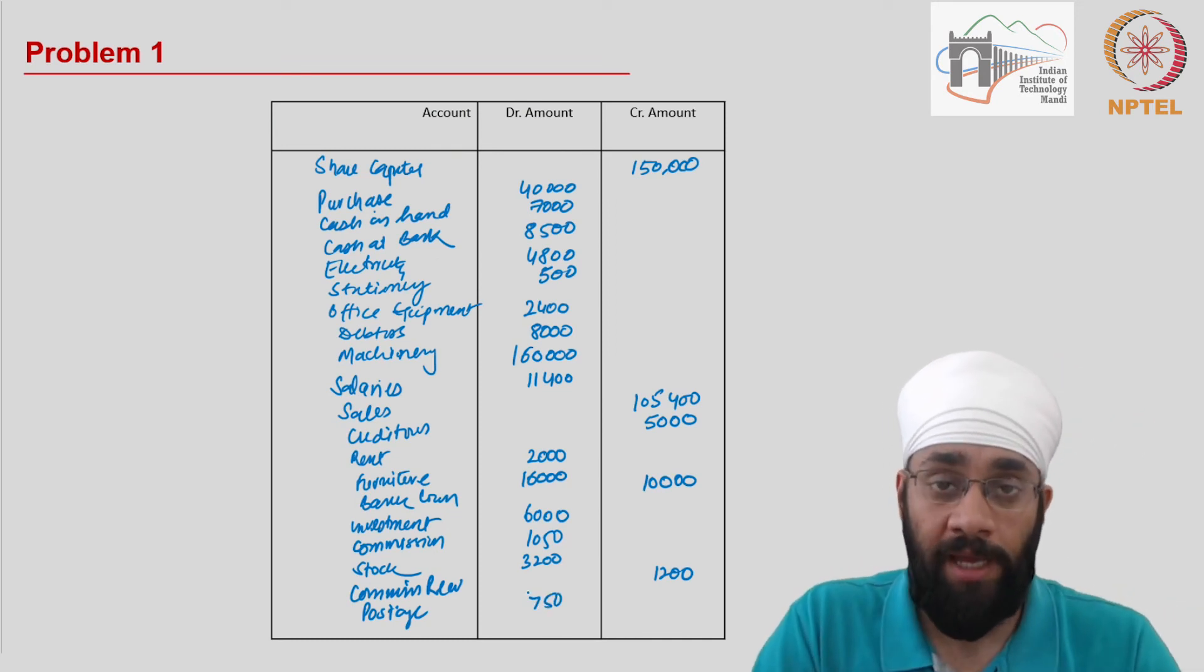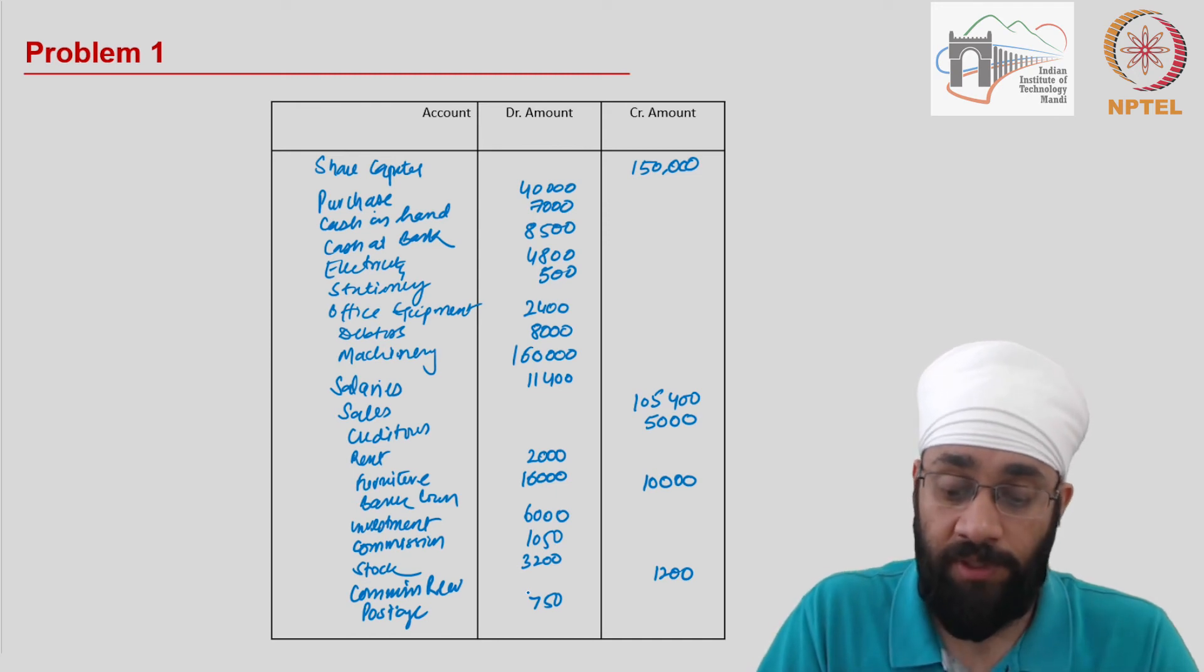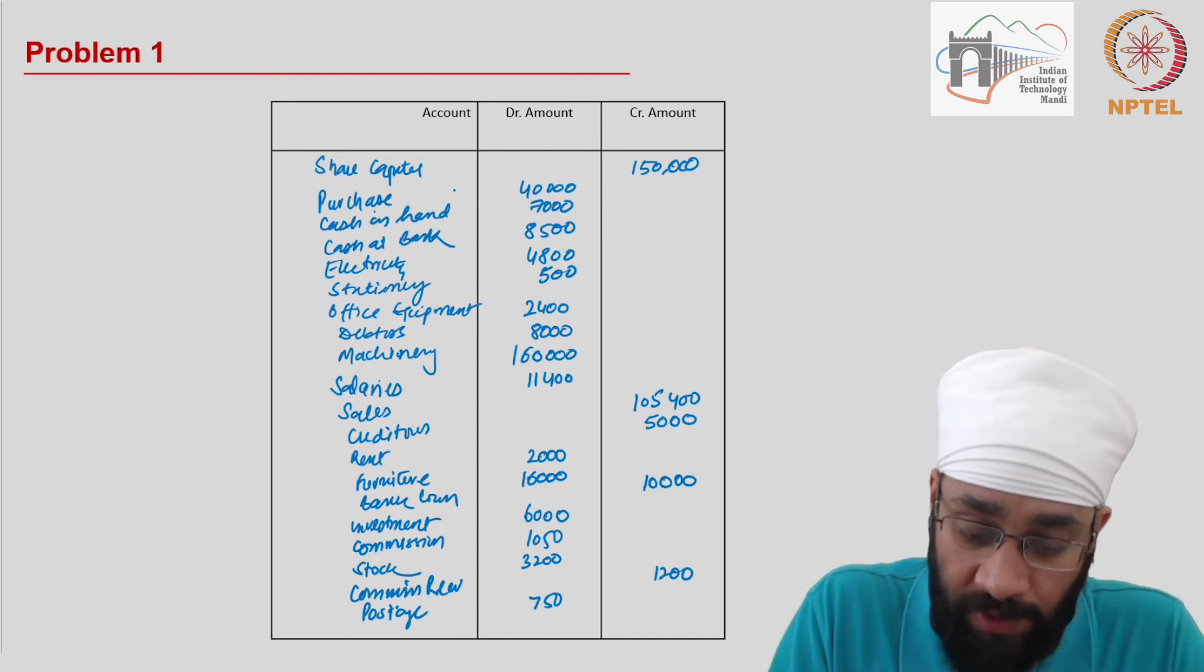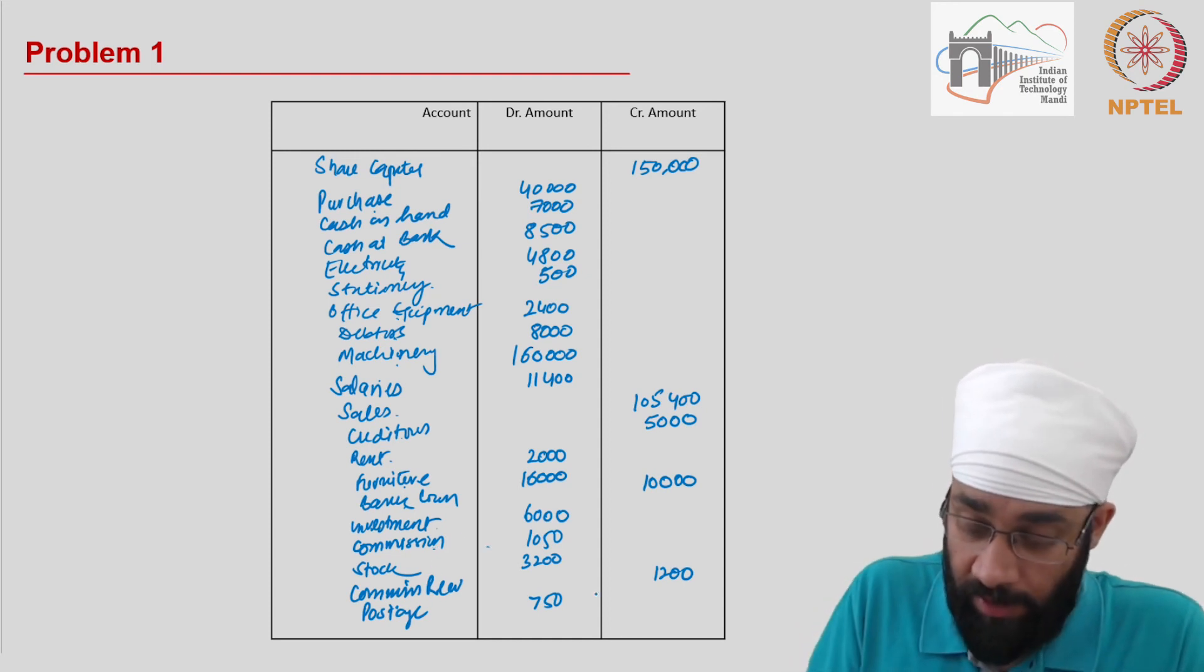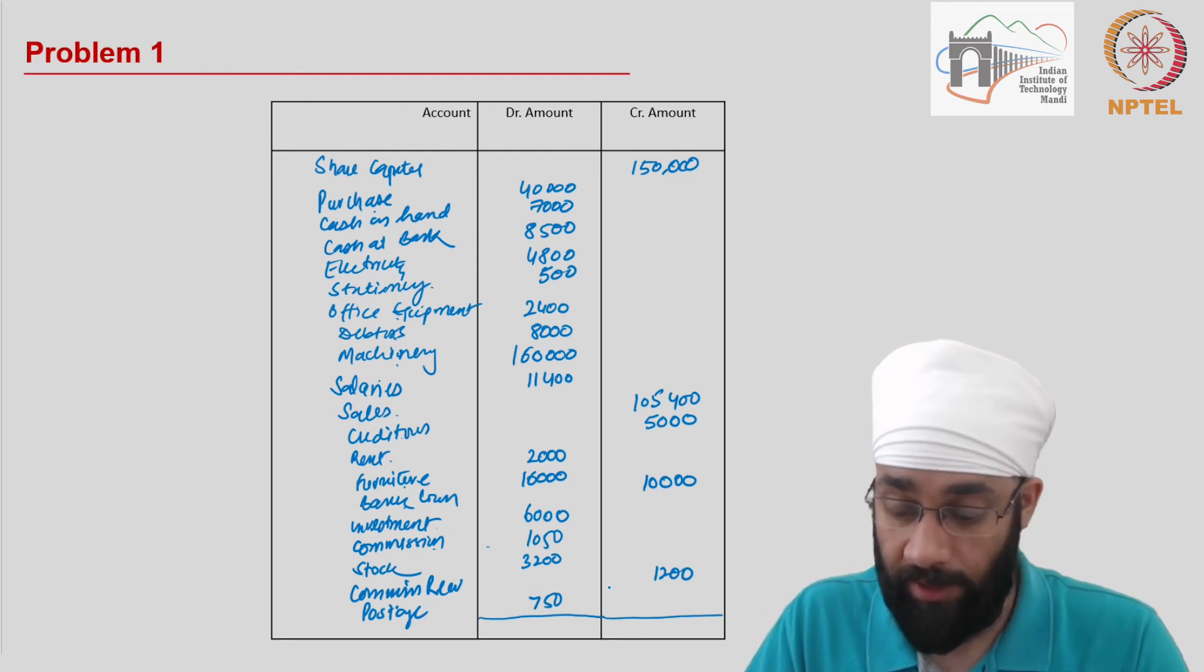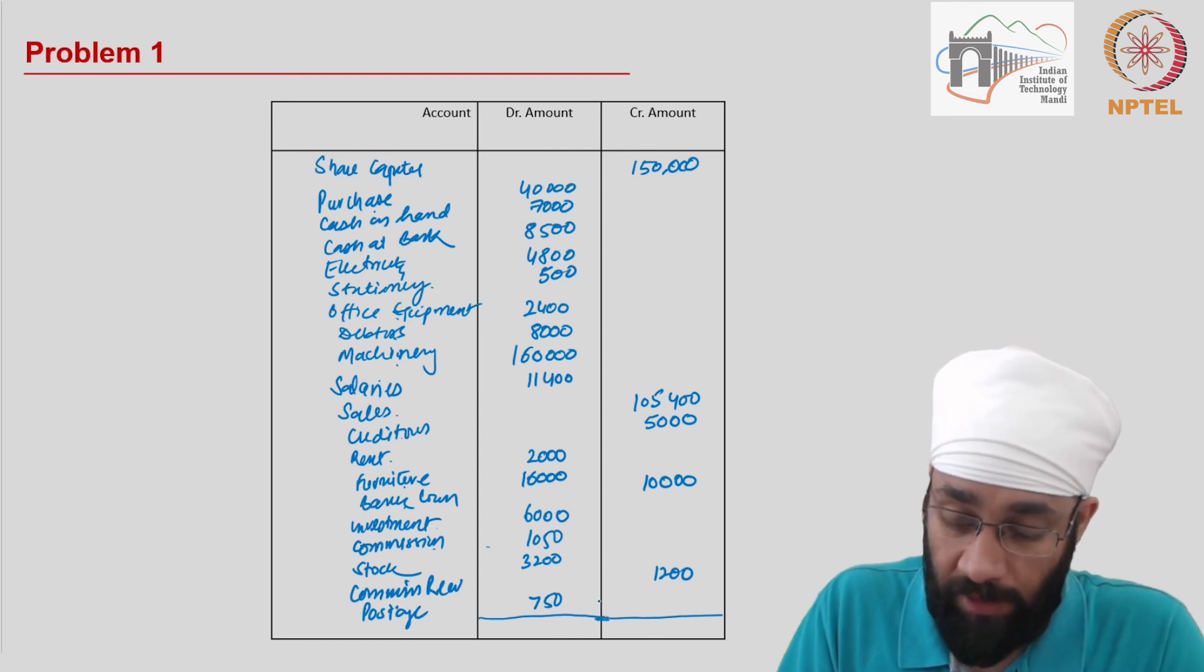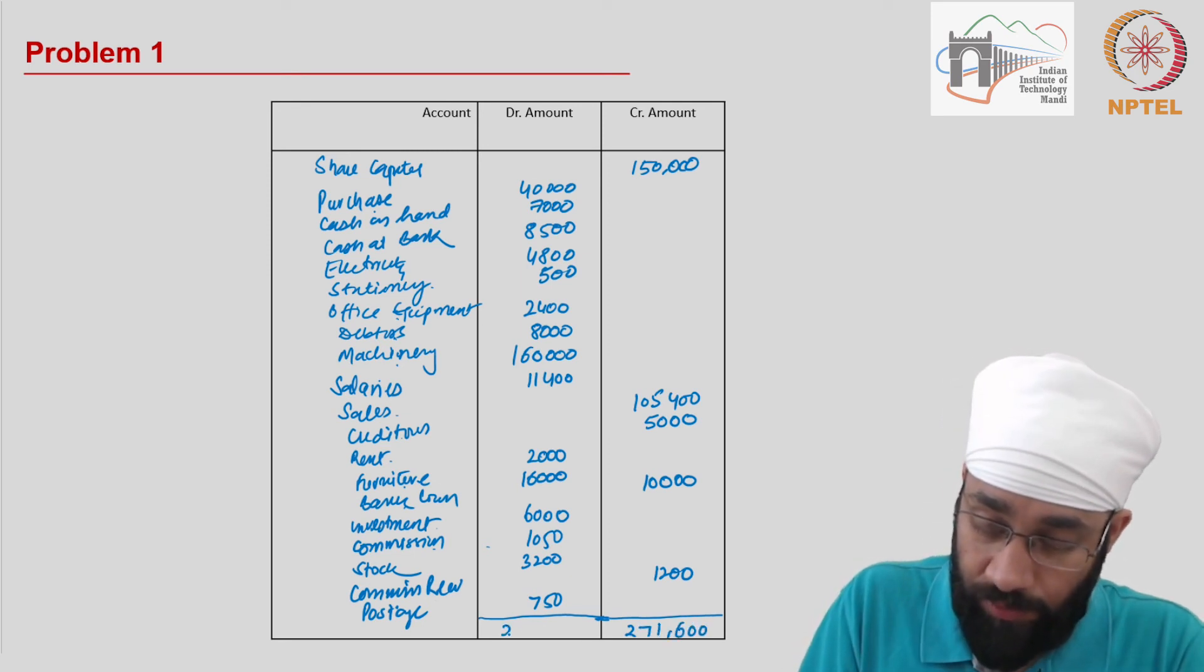We have now posted all the account balances into either debit side or credit side. I'll just run through it to make sure I've posted these items correctly. All we have to do now is figure out the total amount on both sides. If the total is equal, we've done the posting correctly. And this comes out to be $271,600. When you sum up the debit side, it gives you the same total.